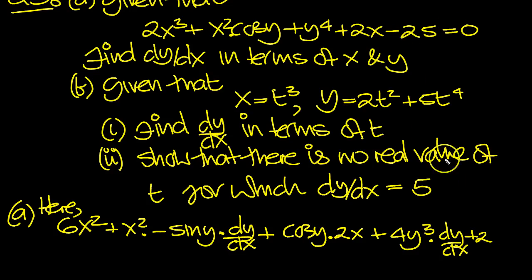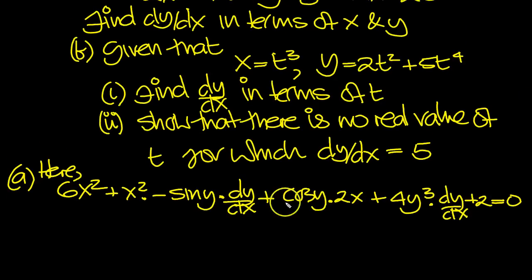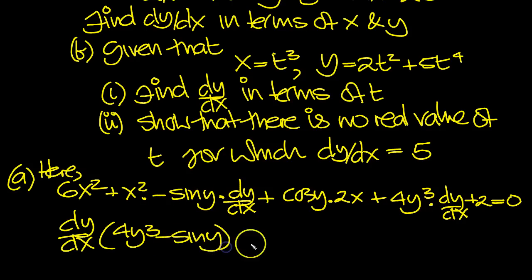Then this is a 0, equals 0. So there's our expression differentiated term by term. So dy/dx, let's collect the dy/dx's and start to simplify. Here we've got a 4y cubed, here we've got a minus sine y. Now that equals, let's move everything else over the other side.